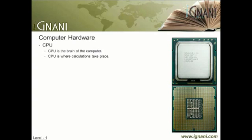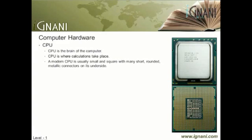The CPU executes and interprets programs, and processes data. In terms of computing power, the CPU is the most important element of a computer. A CPU is housed in a single chip. A modern CPU is usually small and square with many short, rounded, metallic connectors on its underside. Some older CPUs have pins instead of metallic connectors. The CPU is inserted directly into a CPU socket, pin side down, on the motherboard as we saw earlier in the CPU socket section.